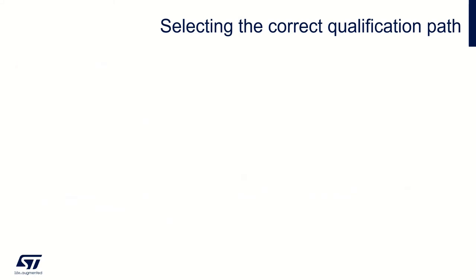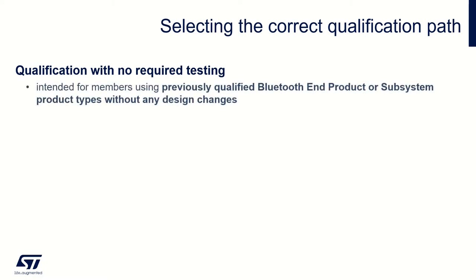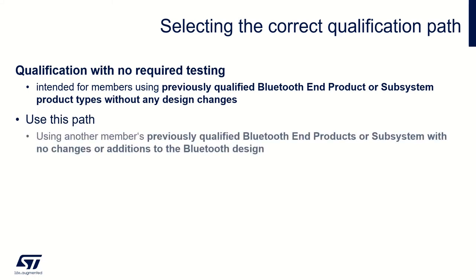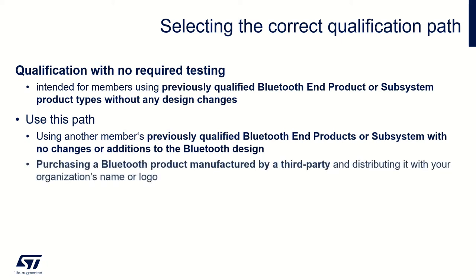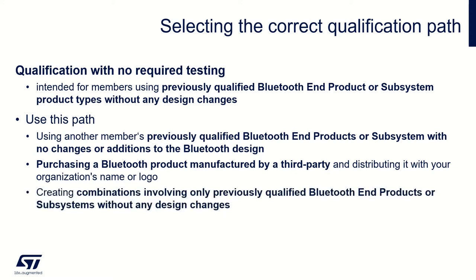The second option is qualification with no required testing. This is intended for members using previously qualified Bluetooth end product or subsystem product types without any design changes. Use this path if you are using another member's previously qualified Bluetooth end product or subsystem in your product with no changes or additions to the Bluetooth design, purchasing a Bluetooth product manufactured by a third party and distributing it with your organization's name or logo — so-called white labeling — or creating combinations involving only previously qualified Bluetooth end products or subsystems without any design changes.